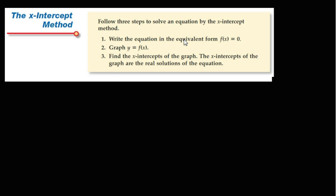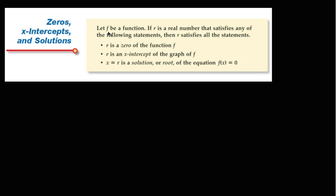A similar method for solving equations is called the x-intercept method. To use this method, we first set the equation equal to 0 and then graph the equation to see where the graph crosses the x-axis — finding all values of x that make the equation equal to 0. If r is a solution, the graph crosses the x-axis at r, making r a zero, an x-intercept, and a root of that equation.